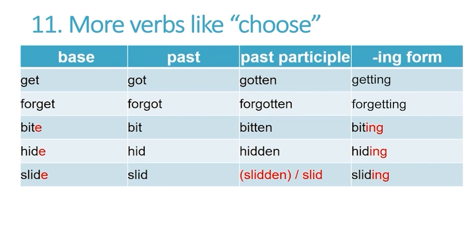Now there are some more verbs that follow the same pattern, in that they use the same vowel sound in both the past and the past participle. However, in the past there is no EN ending, but in the past participle there is.